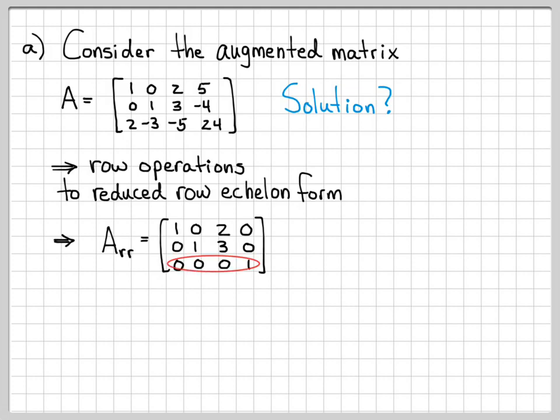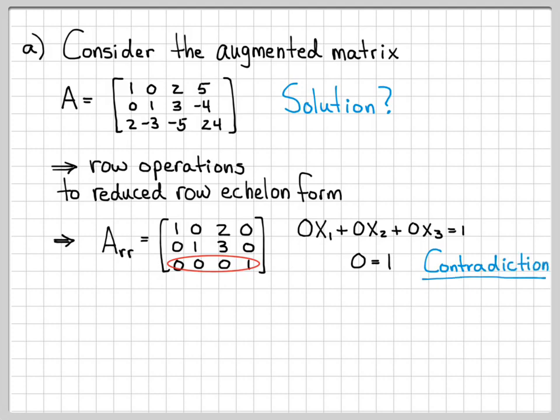In this row-reduced matrix, we look at the final equation and we have all zeros except for a number in the final column: 0, 0, 0, 1. Anytime you see all zeros and then a number, it means you have 0x1 plus 0x2 plus 0x3 equals a number — which is the same as saying 0 equals 1. This is what we call a contradiction. 0 is not equal to 1, so this system of equations does not have a solution.